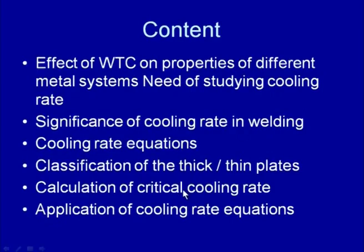Plate classification is mainly based on the number of passes required to complete the joint, and another parameter is the relative plate thickness, which considers thermal properties, the thickness of the plate, and the heat input given during welding. The relative plate thickness criterion is considered more rational and appropriate for classifying the plate as thin or thick. We will also see how to experimentally determine the critical cooling rate using the cooling rate equations and what their applications are.